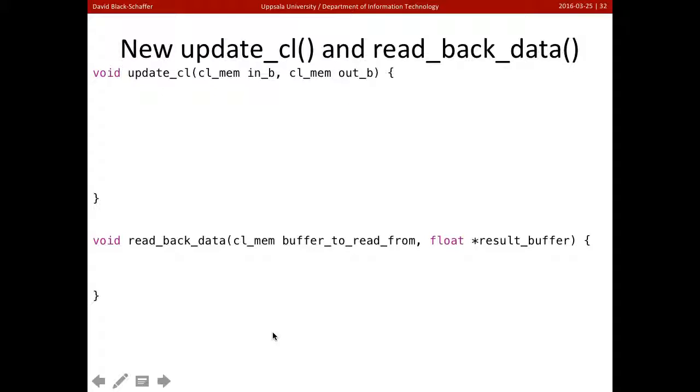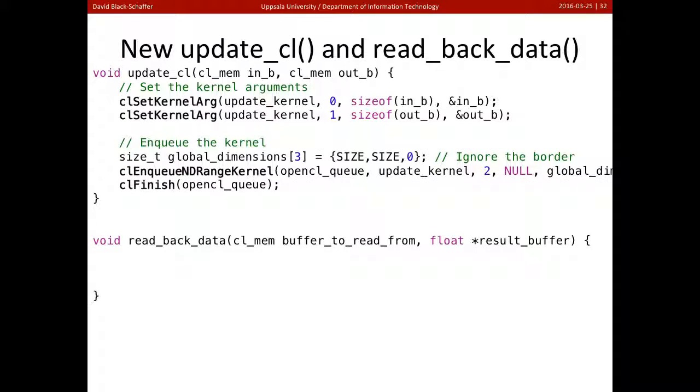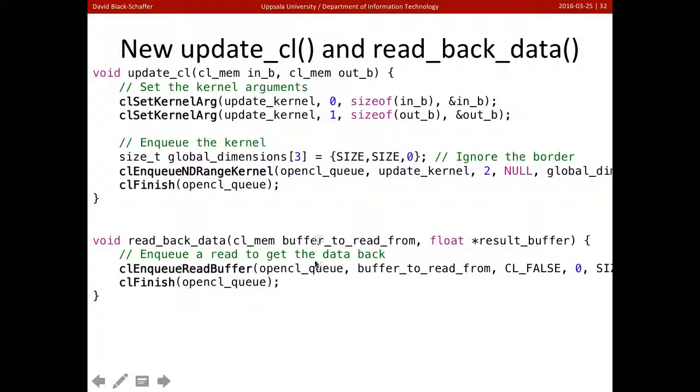So what do update_CL and read_back_data look like? Well, update_CL is now just going to run the kernel. So it's going to configure the kernel with whichever the in and out buffers are, and these may change. In fact, they'll change on every iteration because we're doing a double buffer approach here. And then we enqueue the kernel. So that's all update_CL is going to do. And read_back_data is just going to read back the data. So what we've done is we've taken the writing of the data out of the inside loop. We're no longer writing the data to the device every time.